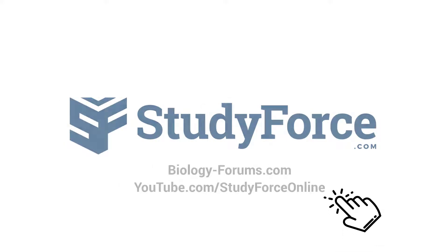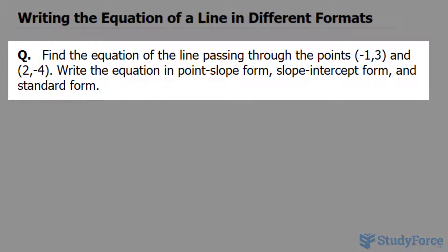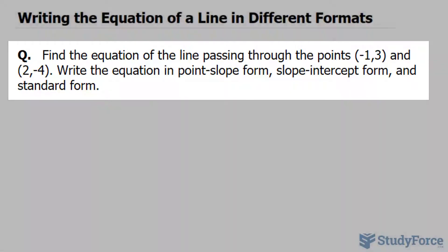In this lesson, I'll show you how to write the equation of a line in different formats. The question reads, find the equation of the line passing through the points (-1, 3) and (2, -4). Write the equation in point-slope form, in slope-intercept form, and standard form.